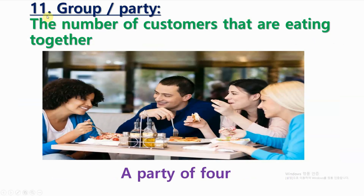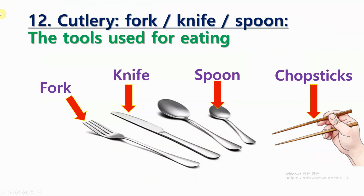Number 11: Group, or party. The number of customers that are eating together. Number 12: Cutlery, such as fork, knife, or spoon. The tools used for eating. Also, chopsticks.